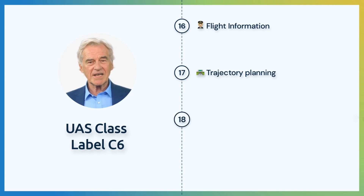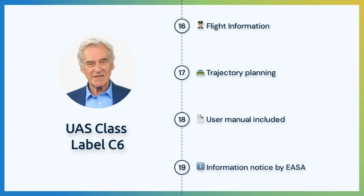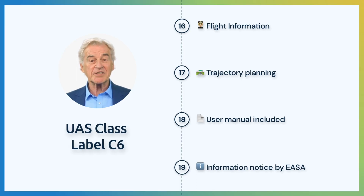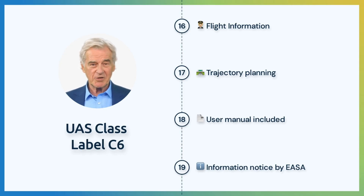The UAS shall have a detailed user manual that reflects the maximum takeoff mass, class, and general characteristics. Additionally, the operative behavior and limitations must be described. And lastly, the UA shall include an information notice published by the European Union Aviation Safety Agency about limitations and obligations within the implementing regulation 2019-947.